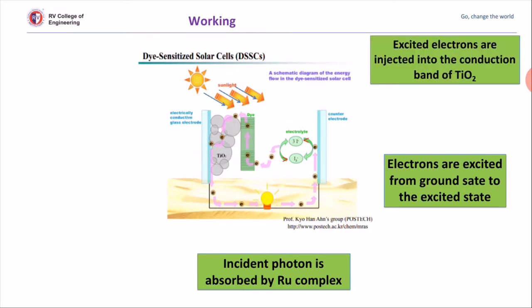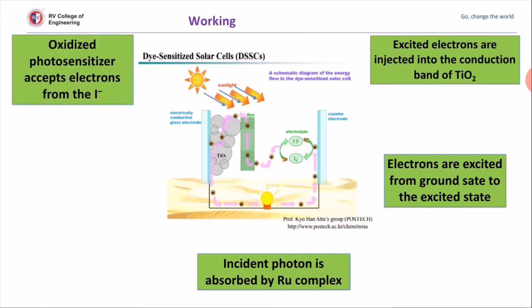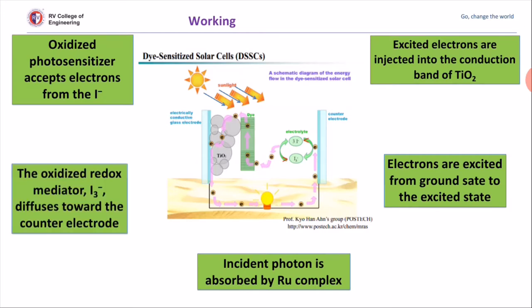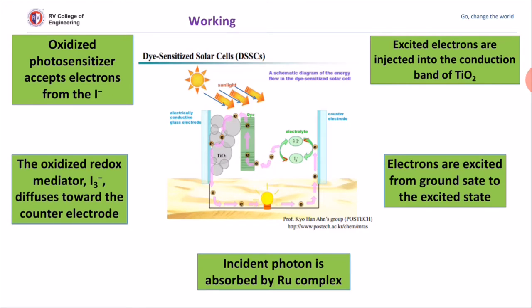The liberated electrons travel through a network of titanium dioxide and finally reach the cathode. The electrons from the cathode reduce triiodide molecules to three iodide molecules. These iodide molecules then reach the dye molecules and oxidize to form triiodide with the liberation of electrons. The liberated electrons are re-absorbed by the dye molecules, and this cycle continues whenever sunlight falls.